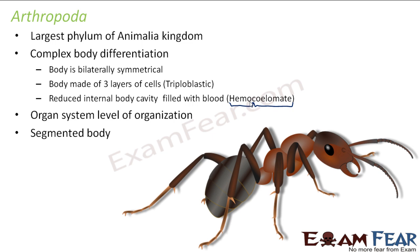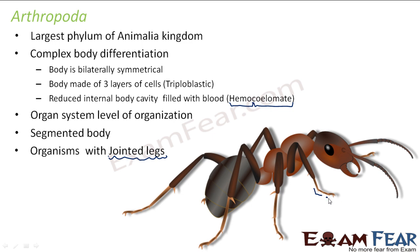They have organ system level of organization and a segmented body. Here in Arthropoda as well we have segmented body — you can see these are the different segments. They are organisms with jointed legs. Now why are they given the name Arthropoda? Because Arthropoda means jointed legs. If you look at their legs, you can observe some joints here. So these are known as jointed legs — their legs are such that it looks as if they have been jointed together.